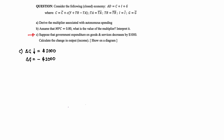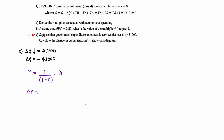The easiest way is to use the multiplier. Recall that Y equals 1 over (1 minus C) multiplied by all autonomous spending, so a change in Y equals K multiplied by the change in any autonomous spending. Since G is part of autonomous spending, we can rewrite this as: change in Y equals K times change in government spending.